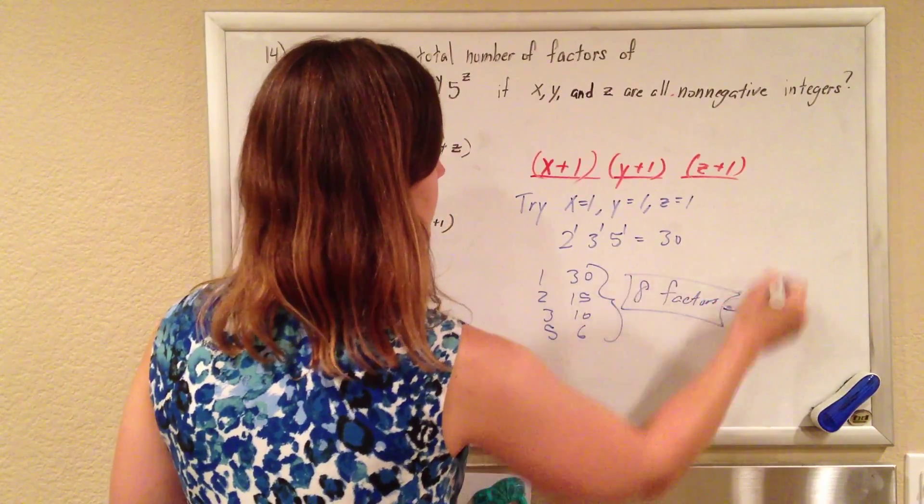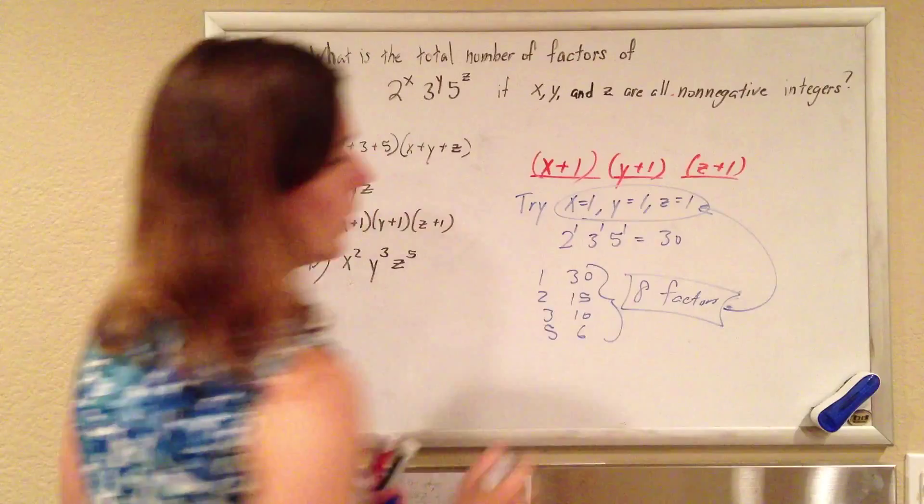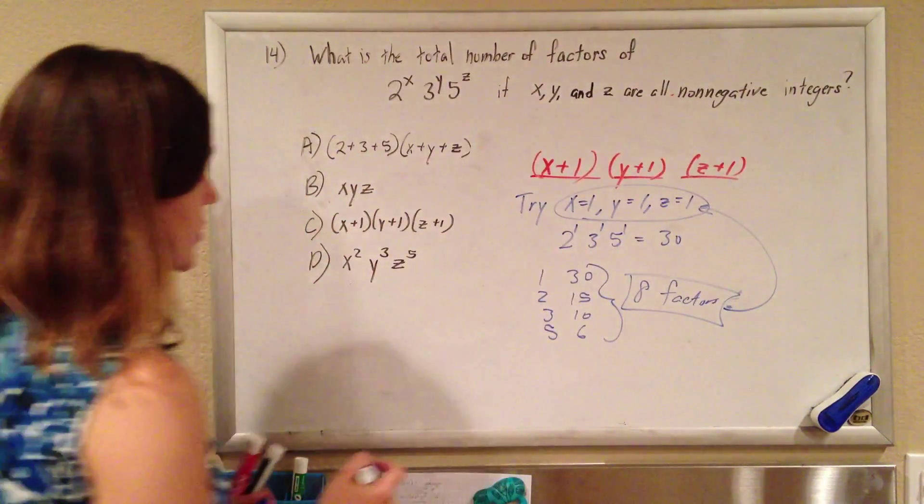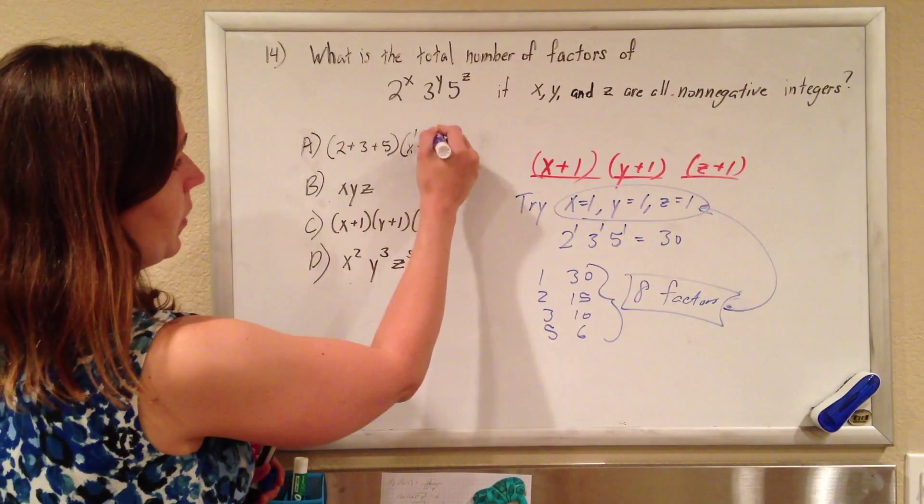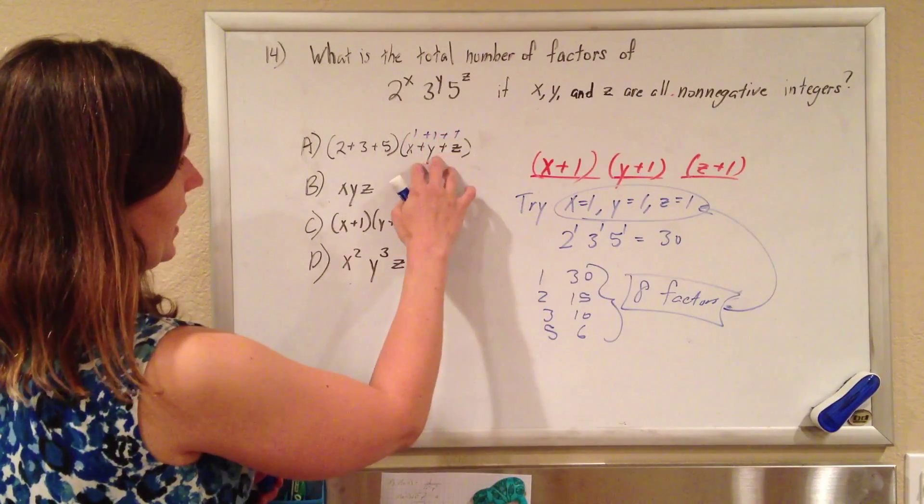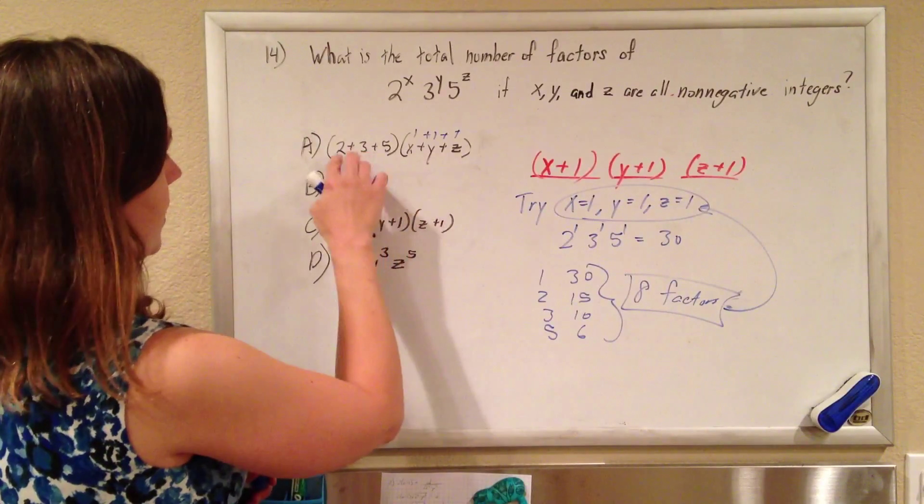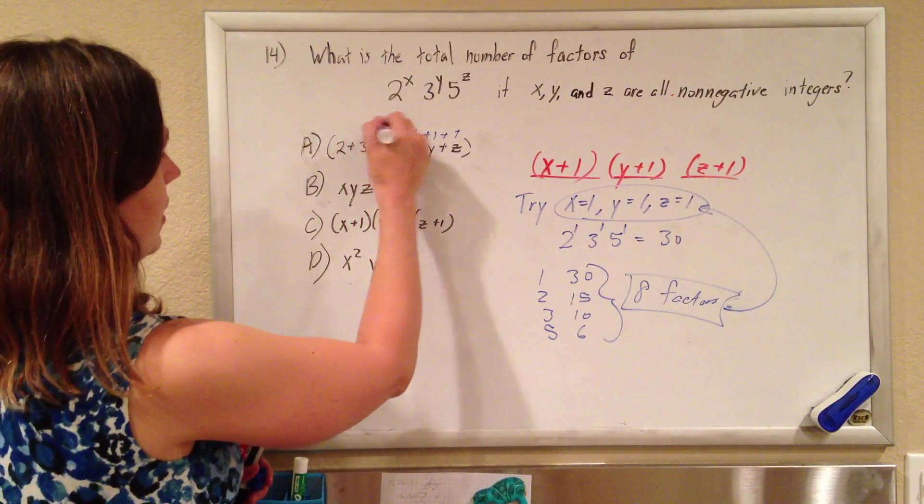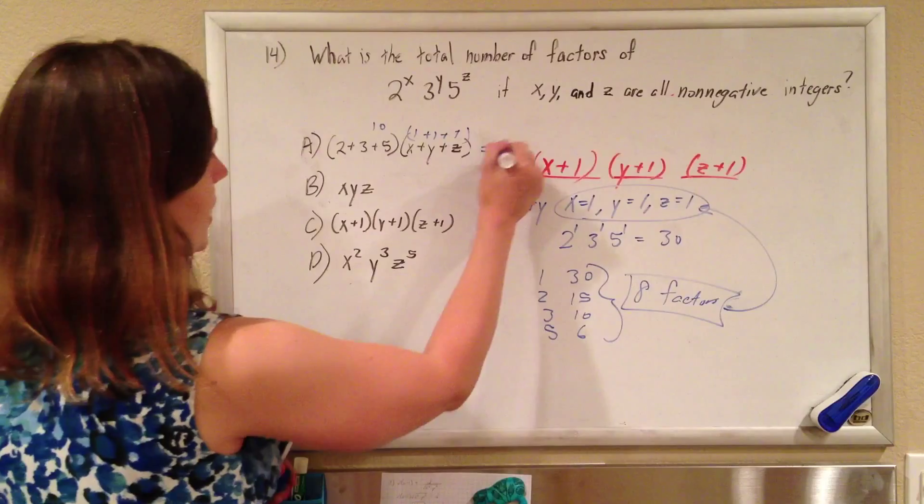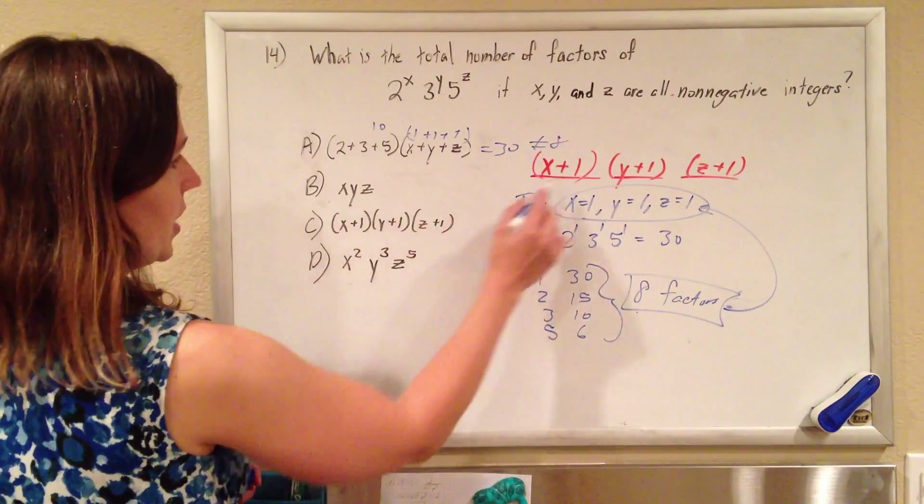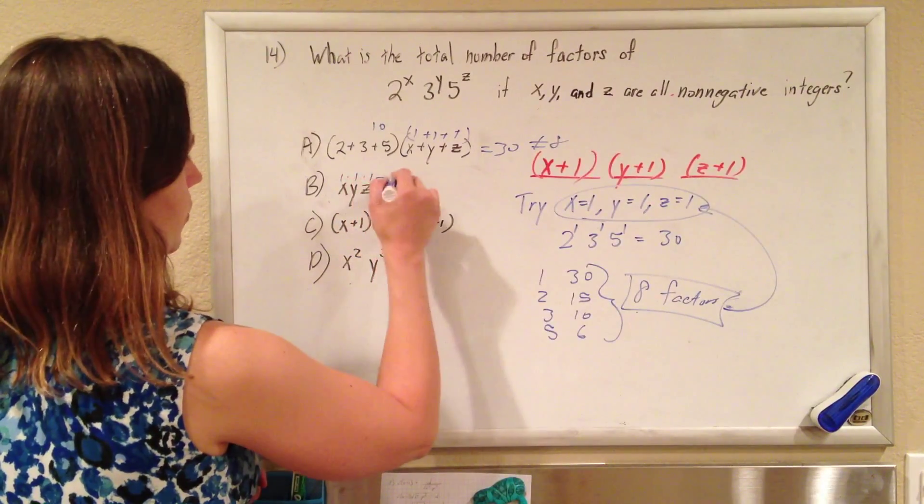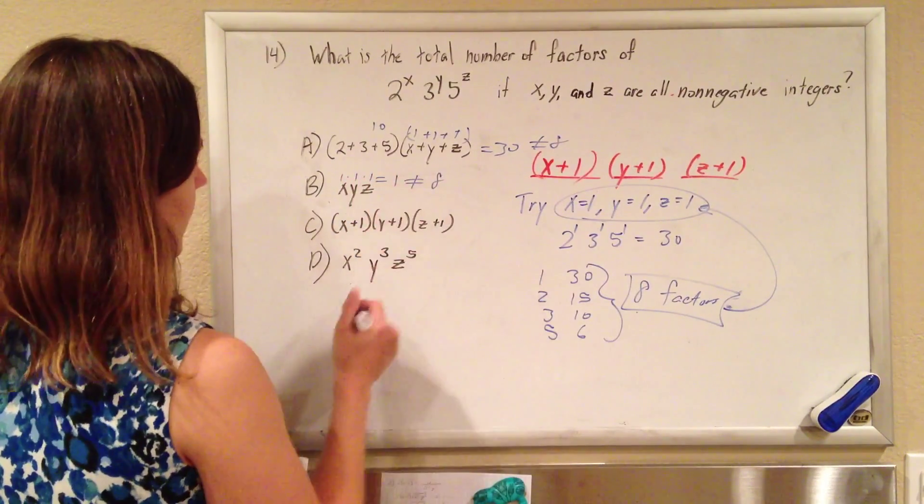So this would be 8 factors when x is 1 and y is 1 and z is 1. So this is supposed to represent the total number of factors. If I put x is 1 and y is 1 and z is 1, I should get 8, and I definitely don't. This is 10 times 3 is 30, which does not equal 8. So that's no good. If I put in 1, 1, 1, 1 times 1 times 1 is 1, which does not equal 8.